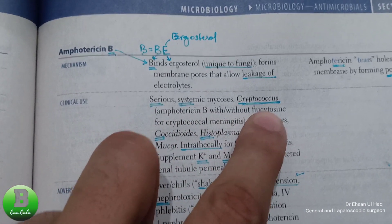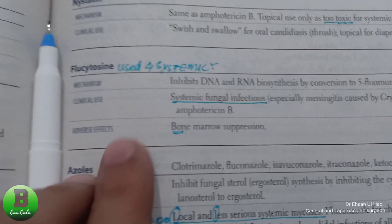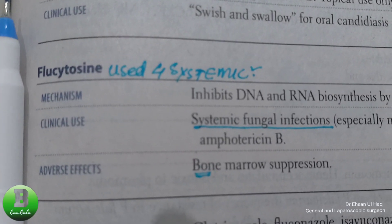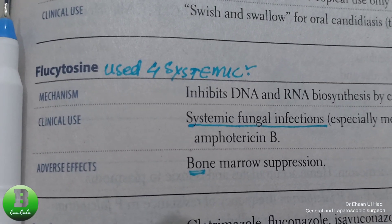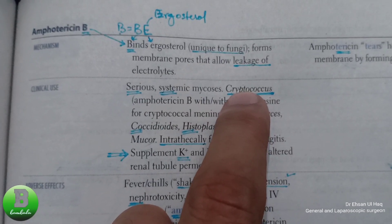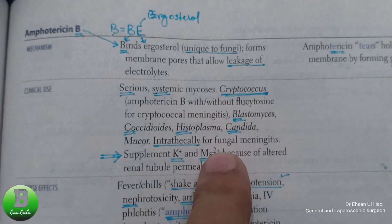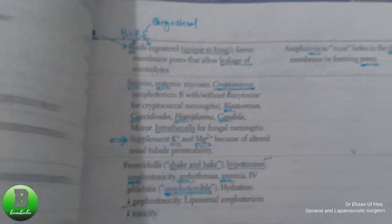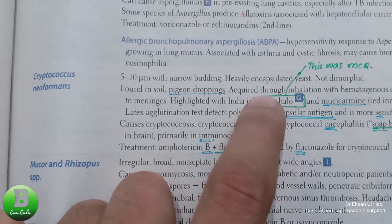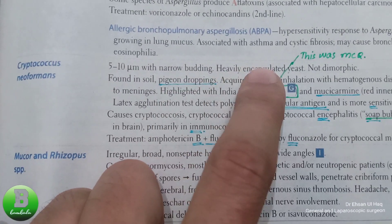Amphotericin B is used for serious systemic mycosis, with or without flucytosine. Flucytosine is another antifungal drug used alongside Amphotericin B for systemic fungal infections.